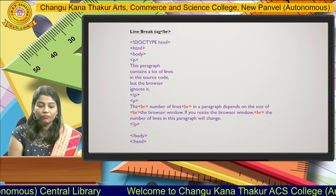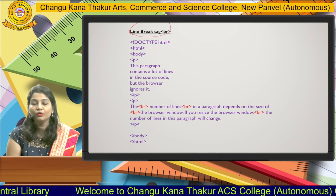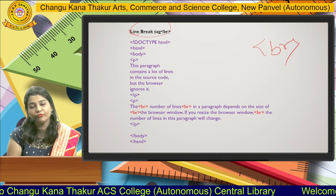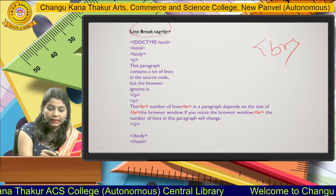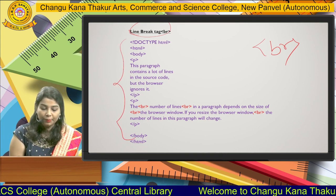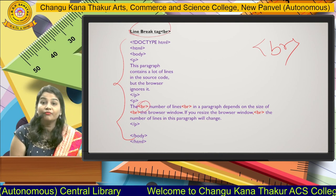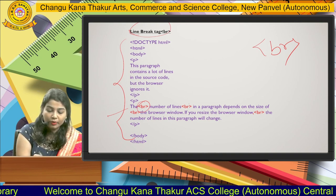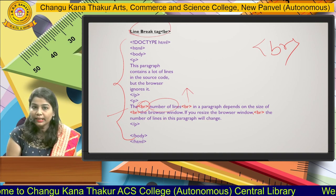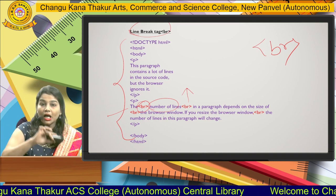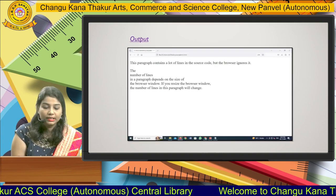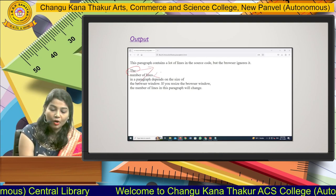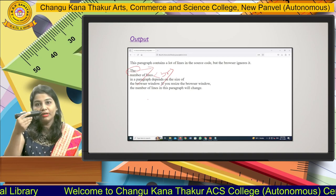Our second tag is the line break tag. The BR tag means if you want to display content on the next line on the web page, you use the BR tag, which stands for break line. In our program, I have used a BR tag after the word 'the' and before the words 'number of line' — that content will appear on the next line. Again I used a BR tag, and 'number of line' appears on the next line, and then again the next line within the paragraph.